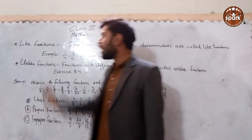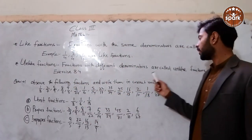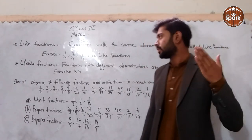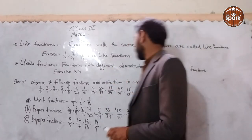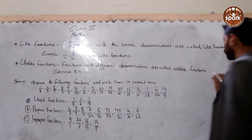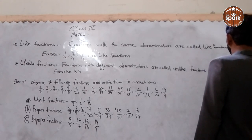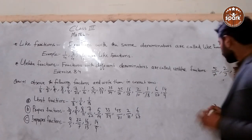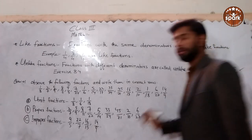Unlike fractions have different denominators and are called unlike fractions. For example, 5 upon 7, 2 upon 3, and 5 upon 8 — these fractions have different denominators, so they are unlike fractions.